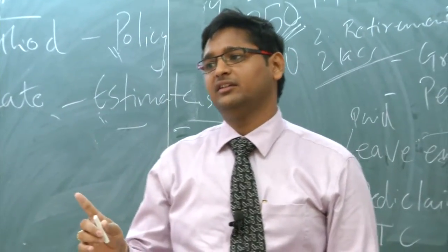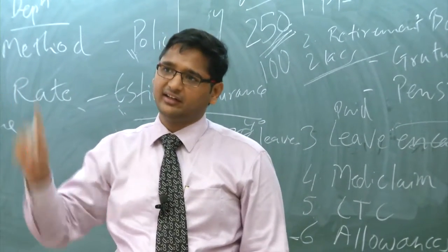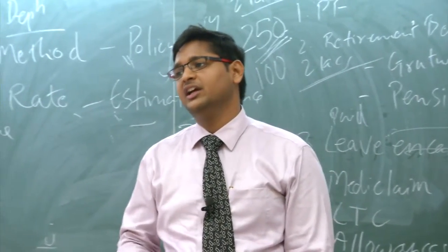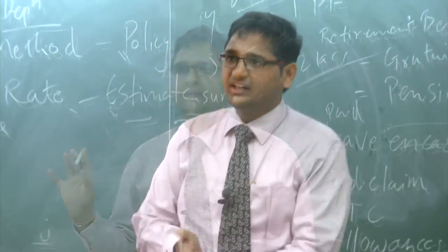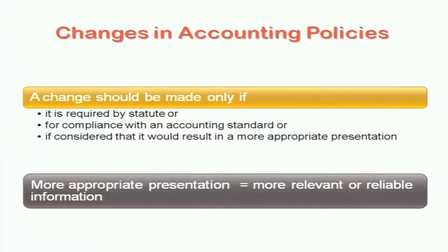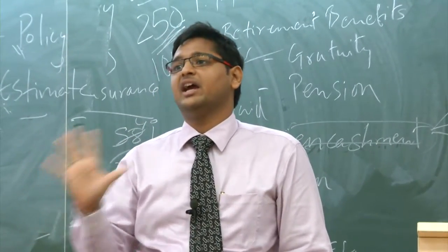In books of accounts, you can change policies. Change in policy is prospective. Only depreciation, as given by AS6, is retrospective when changing from SLM to WDV. Otherwise, any other change in policy is also prospective, like change in estimates. A change in accounting policy is allowed only if it is required by any law, or if you want to start complying with accounting standards, or if it is considered that a change will result in more appropriate presentation. Then and only then are you allowed to change the policy. Whenever you change your policy, you have to give reasons why — you cannot keep changing every year.